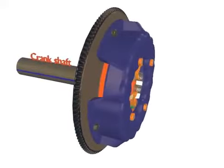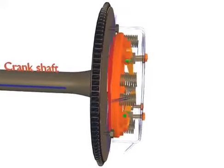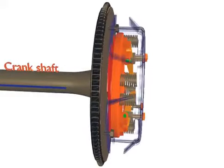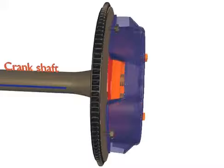This entire assembly is bolted to the flywheel and rotates with it all the time when the engine is running. The flywheel and the pressure plate grip the driven member — that is, the clutch plate — between them under the action of the pressure spring.